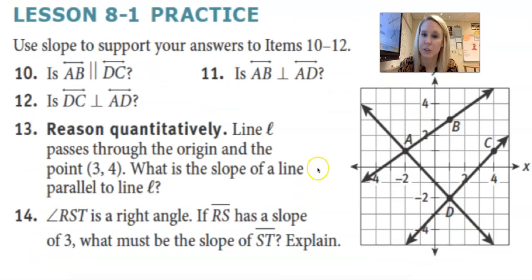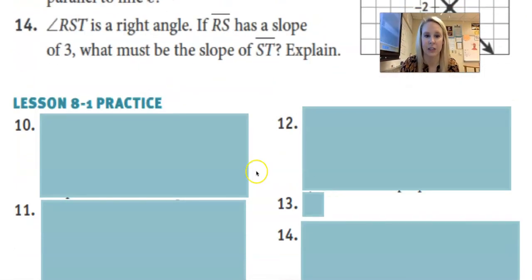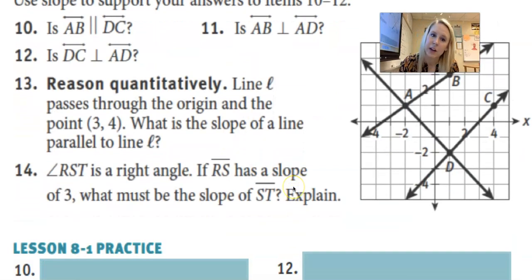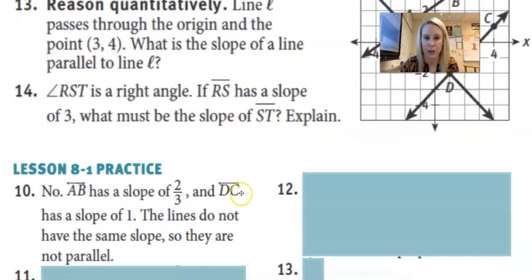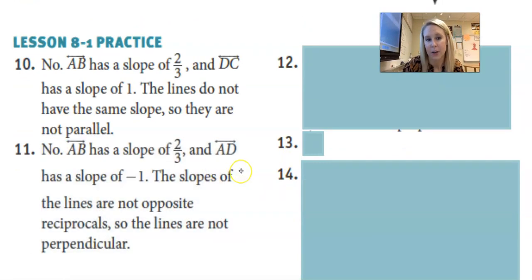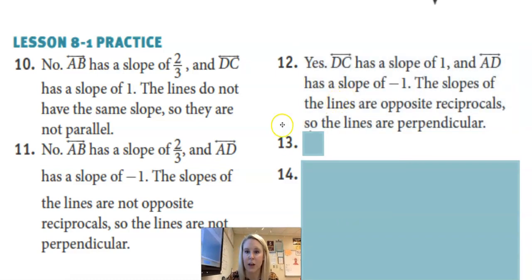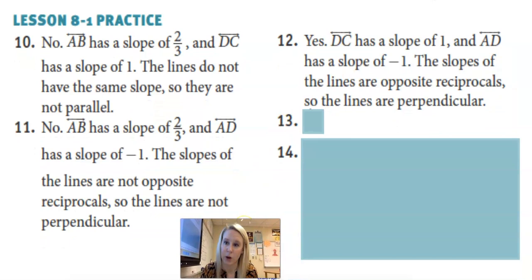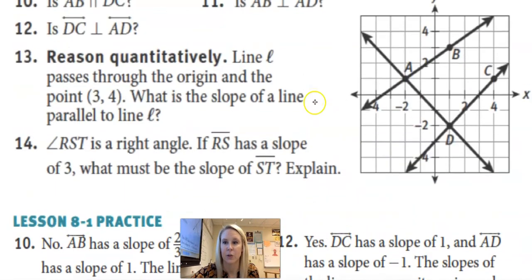Let's move on to number 10. Use slope to support your answers to number 10, 11, and 12. 10. Is AB parallel to DC? No. Slope of AB is two-thirds. Slope of DC is one. So they do not have the same slope, so they are not parallel. Number 11 was a no. AB has a slope of two-thirds. AD has a slope of a negative one. The slopes are not opposite reciprocals, so they are not parallel or perpendicular. 12, yes. So DC had a slope of one. AD had a slope of negative one. Therefore, their slopes are opposite reciprocals. Okay? So let me know if you have any questions on that.